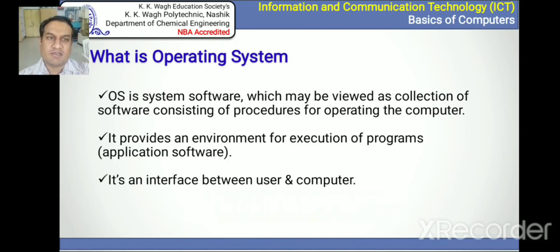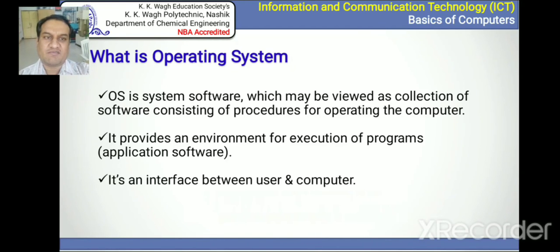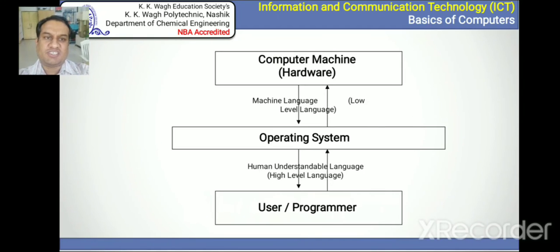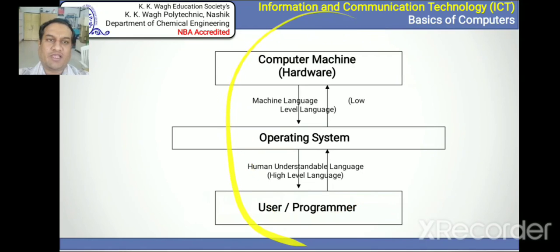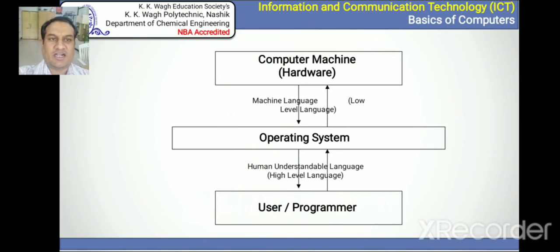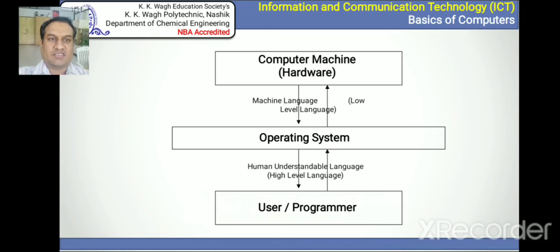The operating system may be viewed as a collection of software consisting of procedures for operating the computer — it operates the system, hence the name. It provides an environment for the execution of application software and is an interface between the user and the computer. The computer machine, operating system, and user form the combination: the user provides data to the computer through the operating system, and the computer gives output to the user through the operating system.